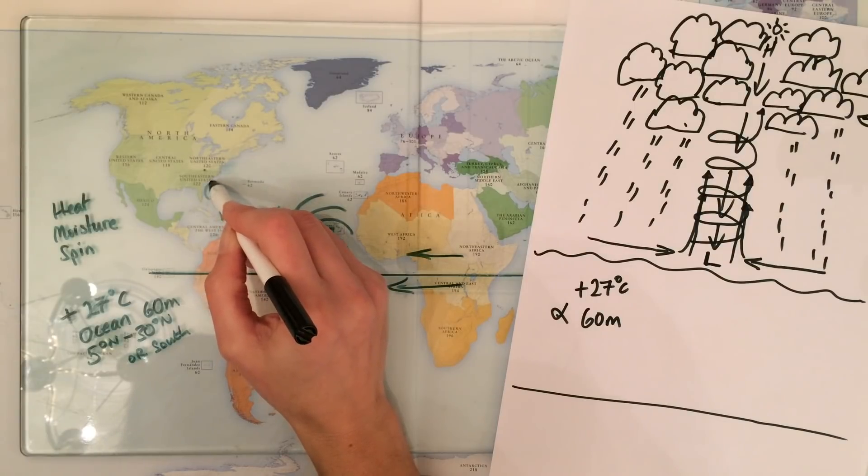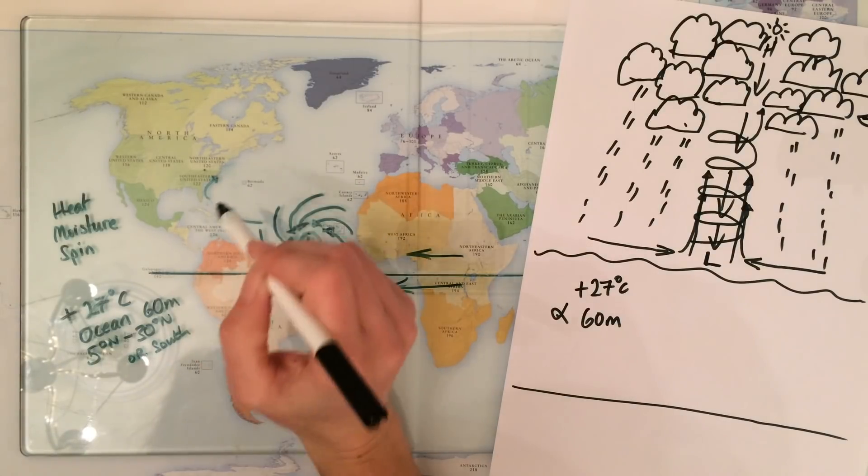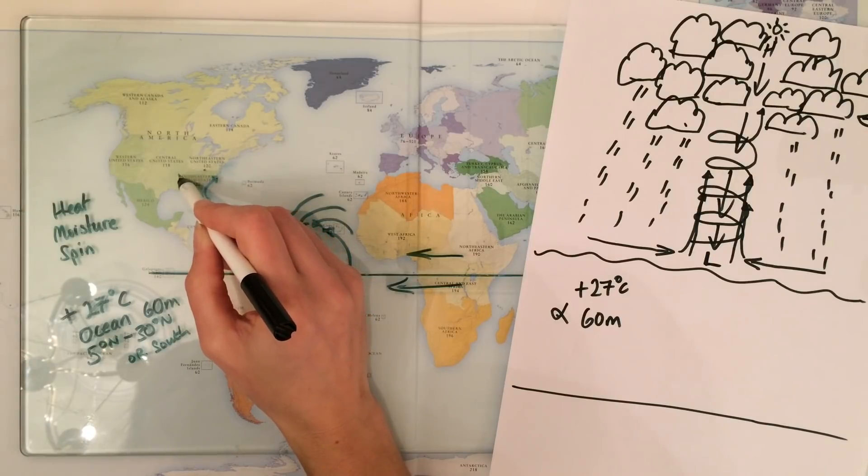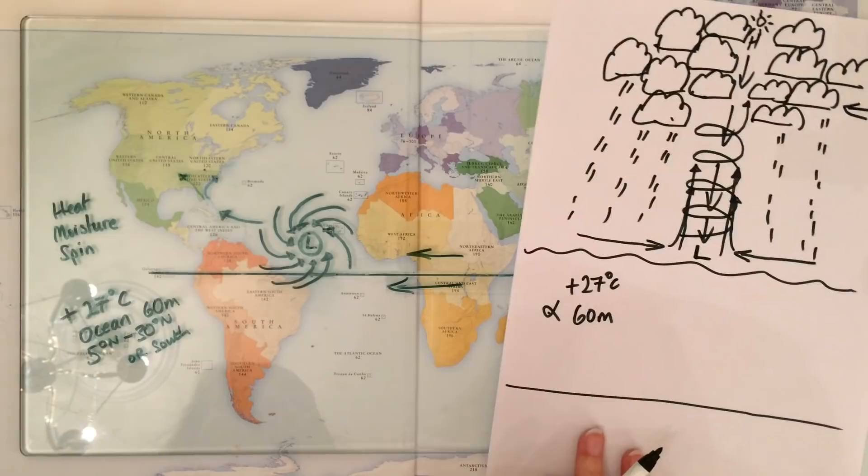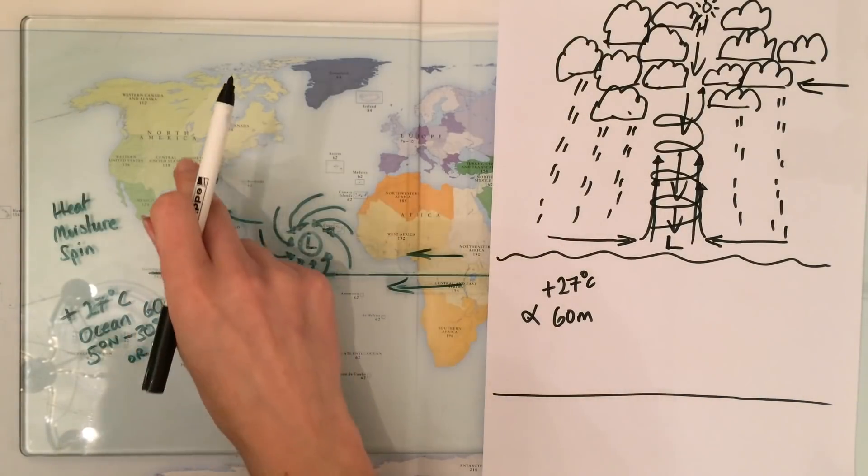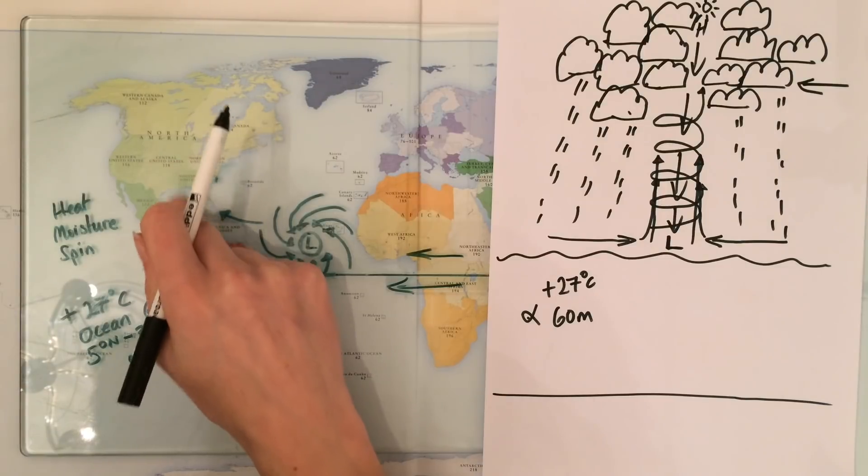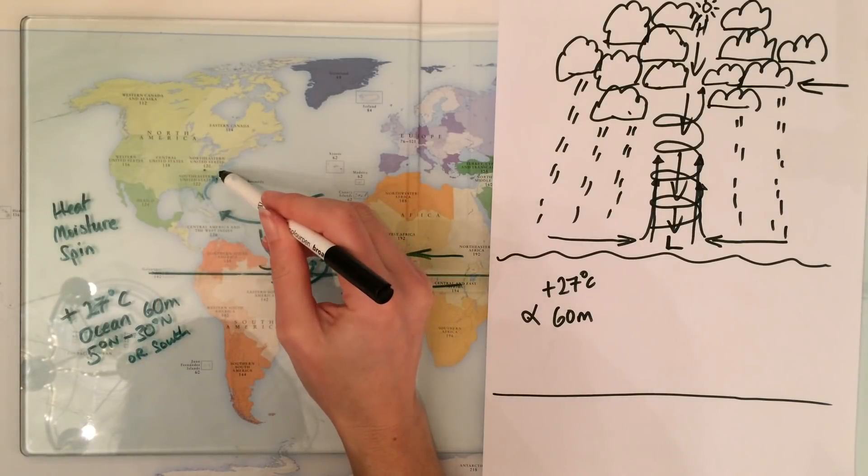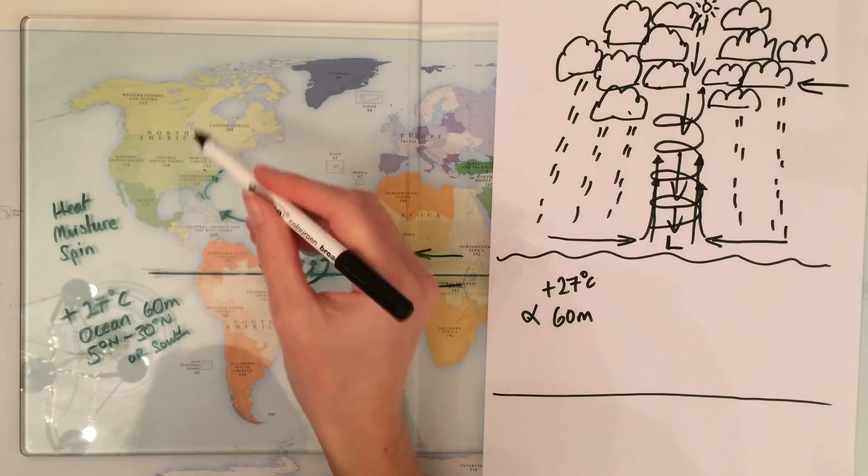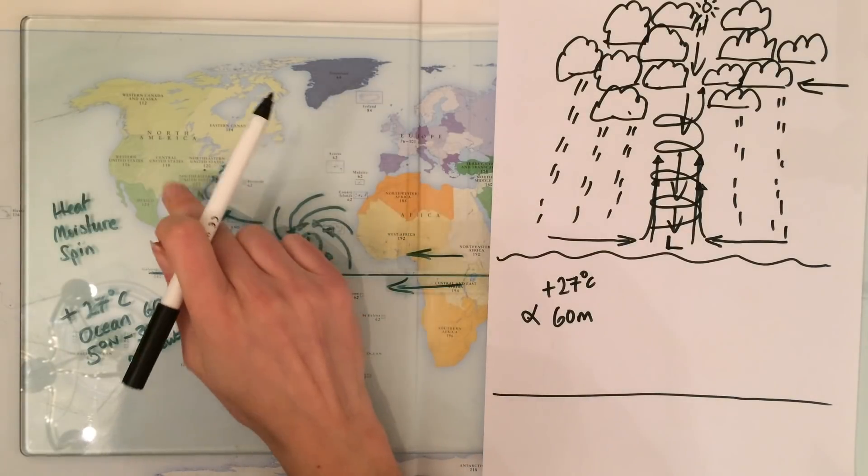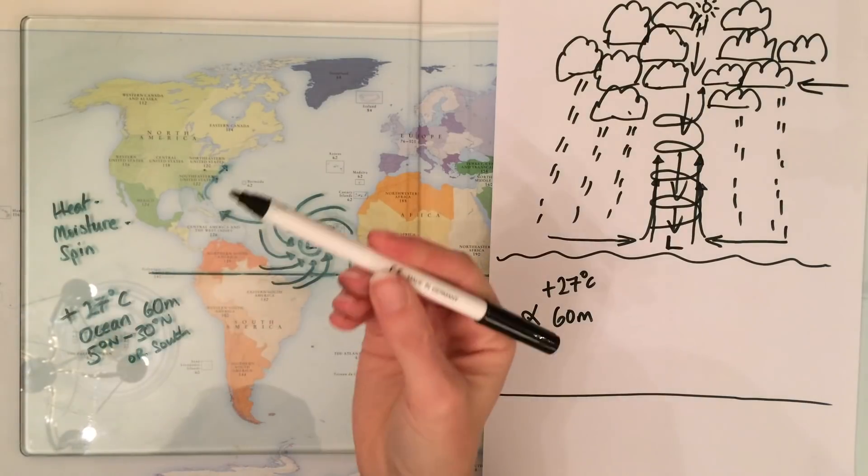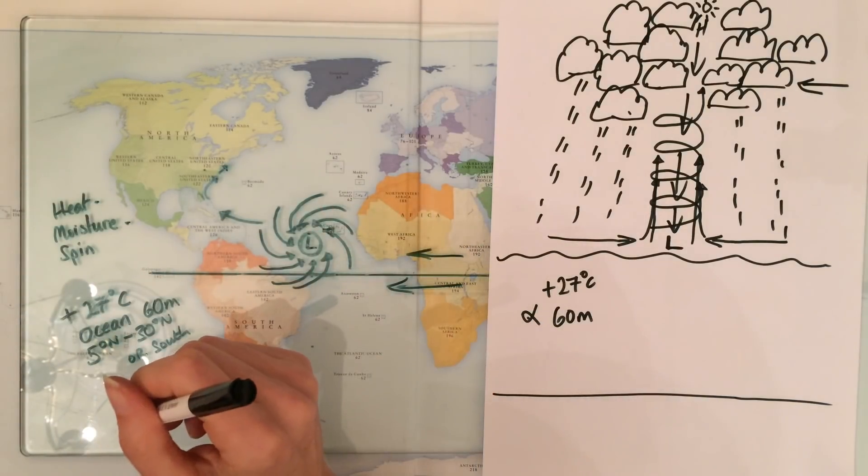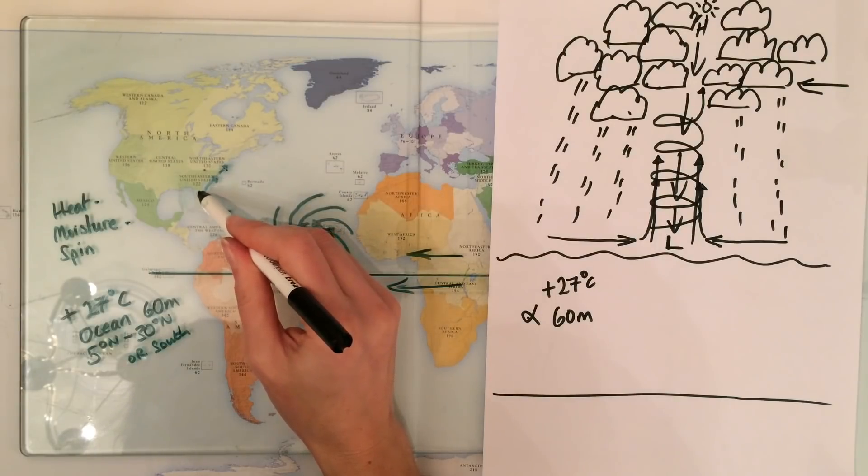The reason for that is it can't really go much onto the land because it will lose its source of moisture. Storms need moisture to fuel them, so it can't really track too much onto the land. It will start to track north, but again it will die out because the further north it goes, it loses its source of heat. It's lost heat or it's lost moisture, it dies, and that's the end of the storm. That's generally why they hit land, and after a day or two they tend to die out.